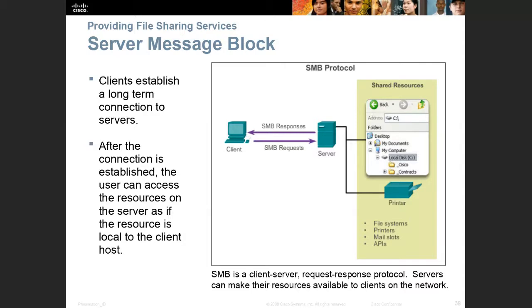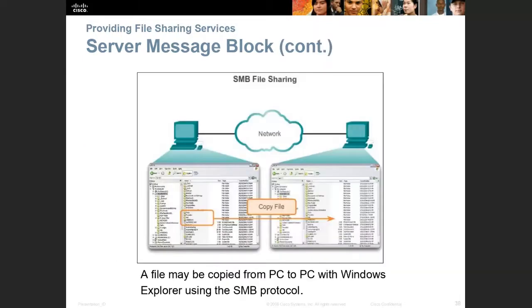Server Message Block (SMB) is Microsoft's file and print sharing protocol. It allows you to log into a server, print to a shared printer, and access shared files or folders — your own private directory on the server acts like your own hard drive. If you right-click a folder, choose Share, and someone copies a file from you, that's using SMB. Printing to a network printer also uses SMB.